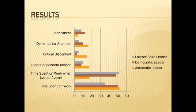Looking at civility, children under the autocratic leader were much more leader-dependent, much more critical in their discontent, and demanded much more attention than those in either the democratic or laissez-faire groups. We also saw a pattern of less friendliness in the autocratic group. The most friendliness was exhibited by boys who were part of a group with a democratic leader. These are some interesting findings, which I think is the main reason this is such an influential study.